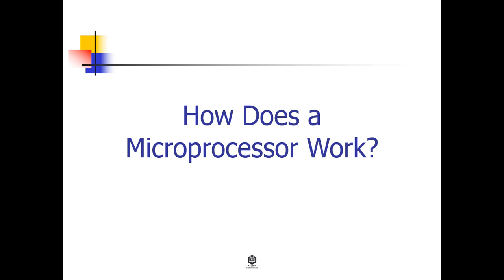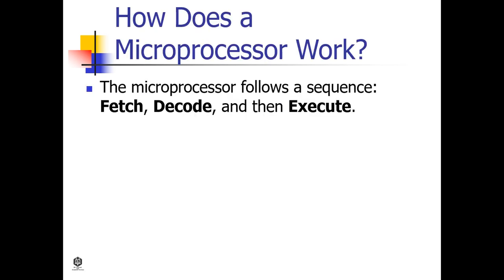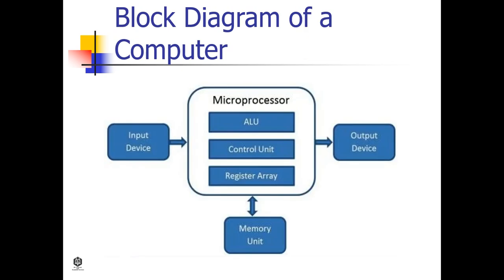But how does a microprocessor work? The microprocessor follows a sequence: fetch, decode, and then execute those instructions until a stop instruction is reached, after which it sends the result in binary to the output. Between these processes, the register stores temporary data and the ALU performs the computing functions.